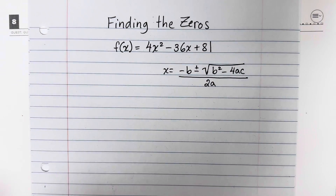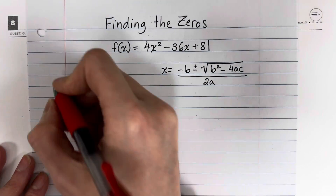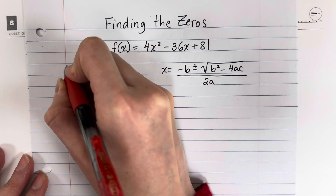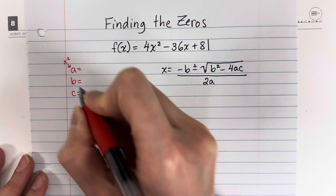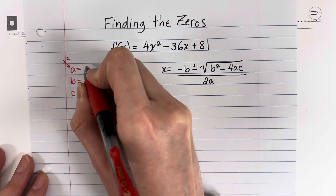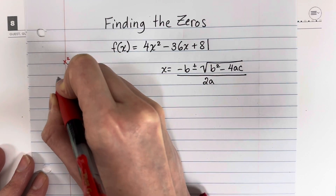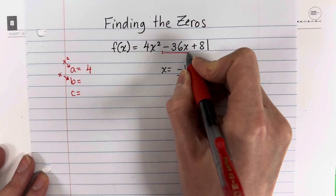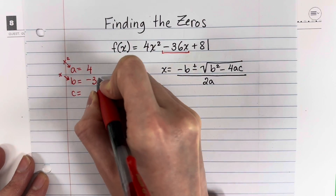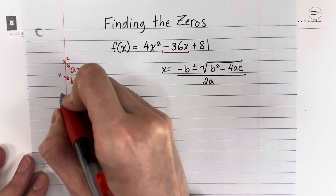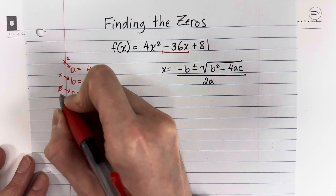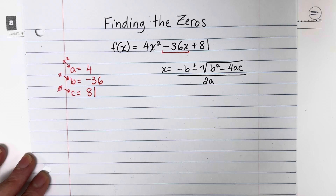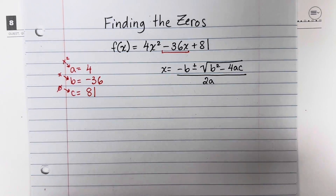To use the quadratic formula, we need to identify A, B, and C. A is the coefficient of x squared, which is 4. B is the coefficient of x, which is negative 36 — don't forget that negative. And C is the constant with no variable, which is 81. Now let's input those into the formula.